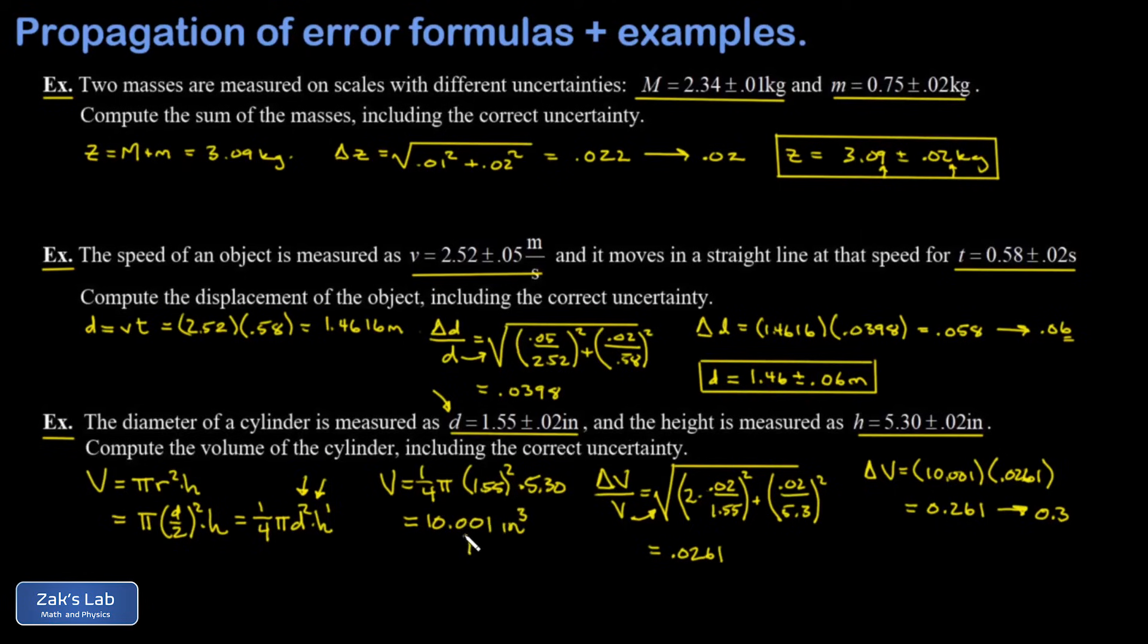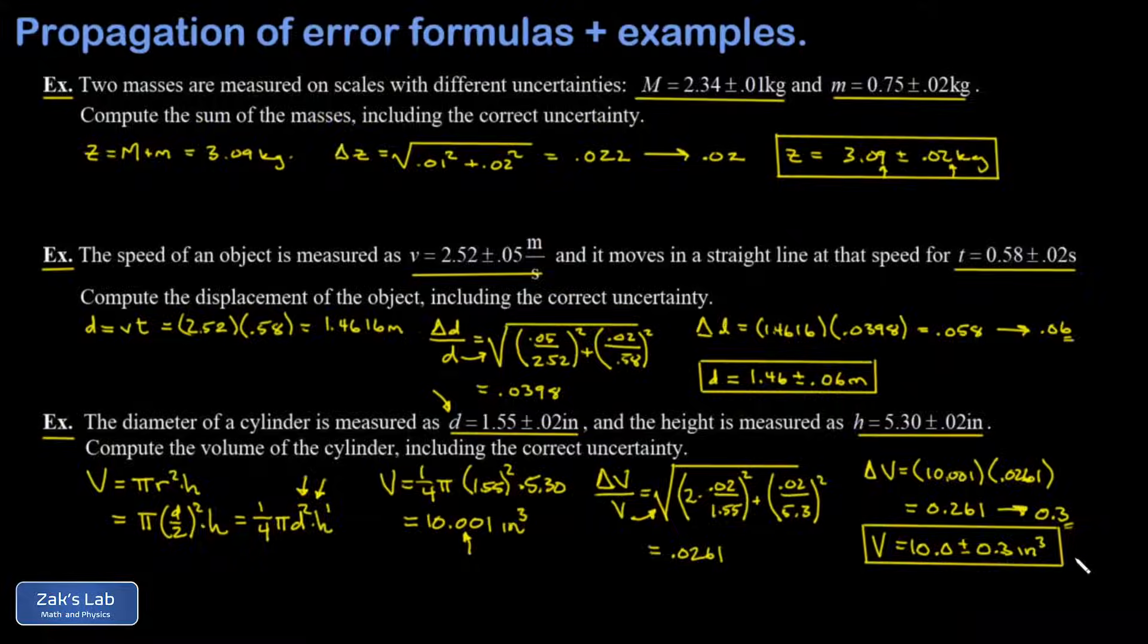And then I'll round off my volume to the same decimal point as the one addressed in the uncertainty, in other words, the tenths place. So V is going to be 10.0, plus or minus 0.3. Don't forget the units, that's cubic inches in this case, and we're done.